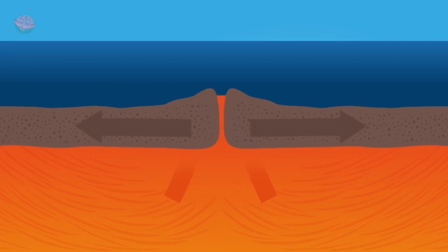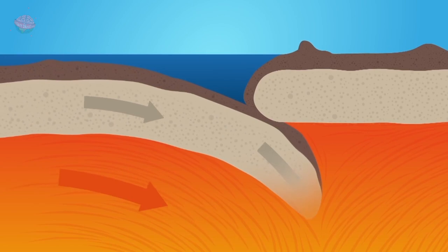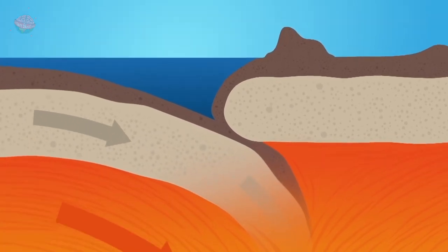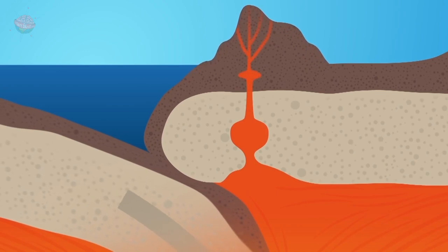Underneath these moving plates is a hot liquid called magma. When the plates converge, it causes one plate to go underneath the other. This pushes the hot magma upwards, allowing it to come through the nearest opening, a volcano.